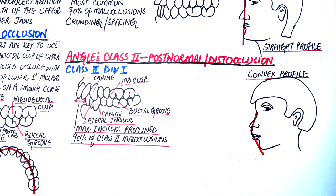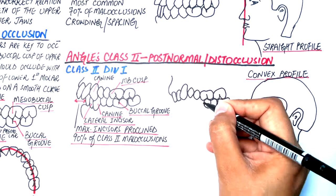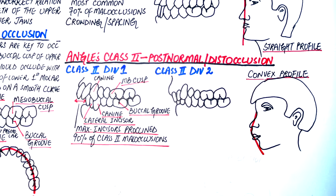The remaining 10% of Angle's Class 2 are Division 2, which involves retroclined maxillary incisors.